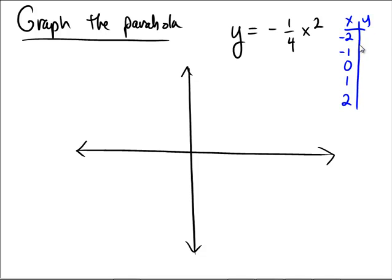First of all, replace x with negative 2, and that's going to yield negative 1 fourth, negative 2 squared, which is negative 1 fourth multiplied by 4, and that's equal to negative 1. So negative 2 gives us an output of negative 1.